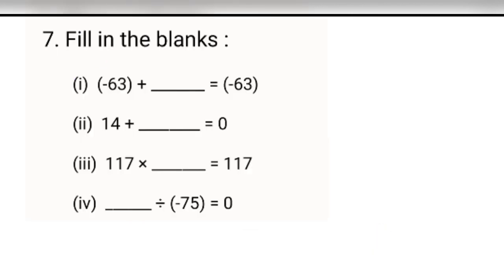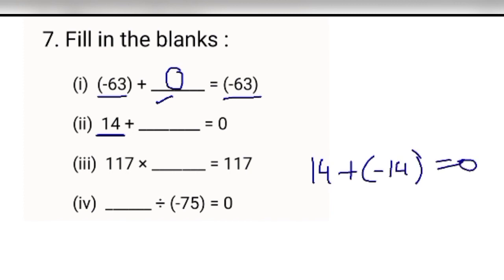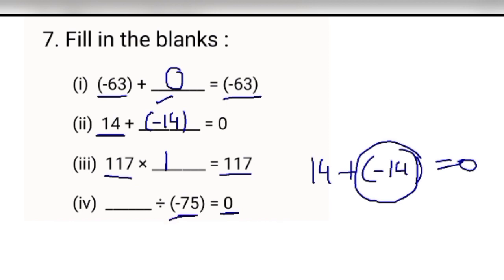Next is fill in the blanks. Minus 63 — what should you add to get the same number? Adding 0 gives the same number, so 0 goes here. Which number added to 14 gives 0? The additive inverse — minus 14. For 117 multiply dash equals 117, multiplying by 1 gives the same number, so the answer is 1. For something divided by minus 75 to give 0, the numerator must be 0.